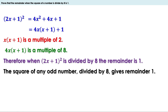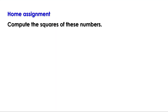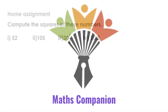Today we used the identity (a + b)² = a² + 2ab + b² to solve several problems. For homework, compute the squares of the following numbers: 52, 105, 20½, and 10.2. We will discuss the remaining problems in the next video. Bye!